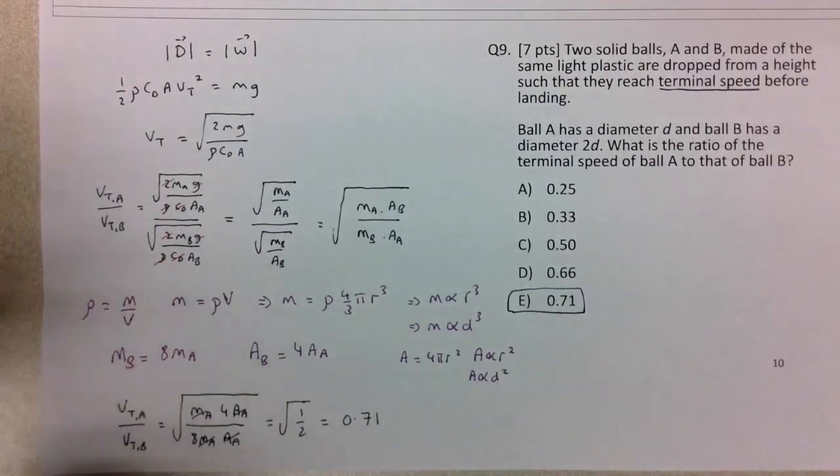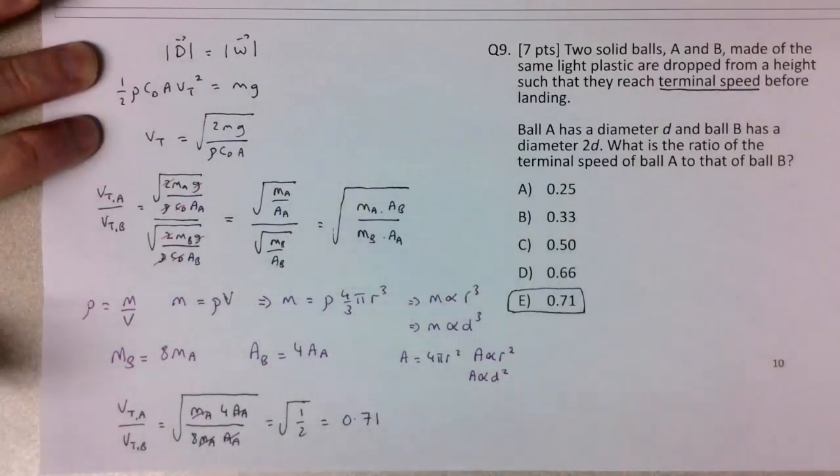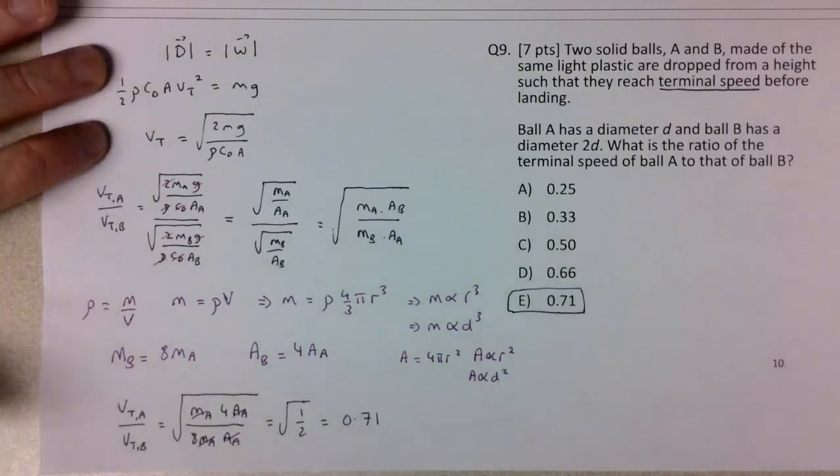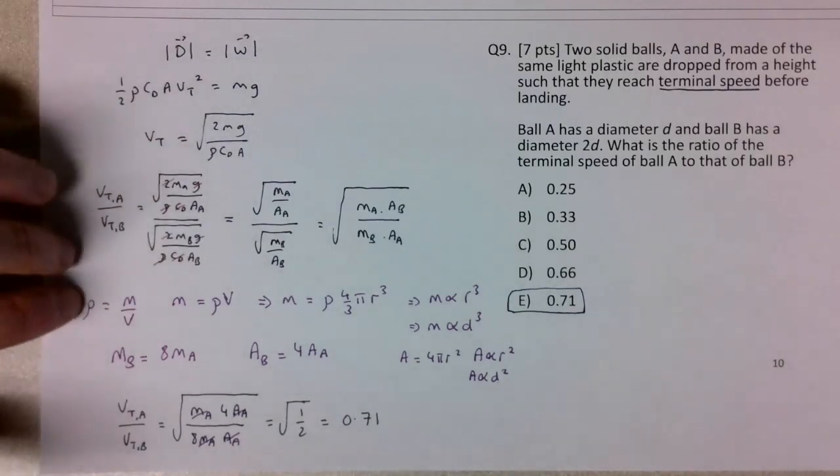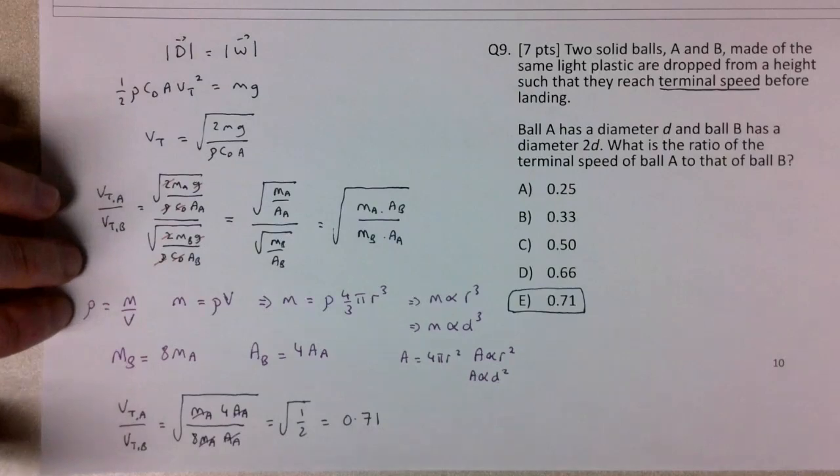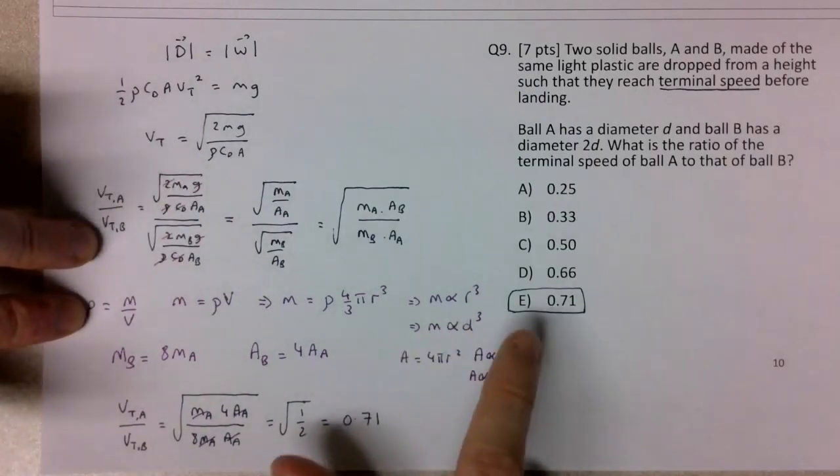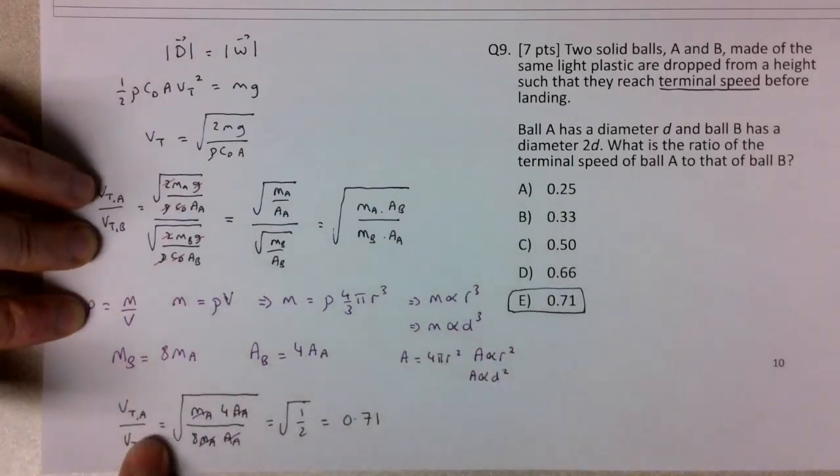That gives the correct ratio of their terminal speeds. It's a challenging question evoking the conditions for terminal speed where drag equals weight, with lots of algebra in the formula ratio. To get the masses, you need to think about the density of the plastic and scaling relationships between volume and mass with diameter, and area with diameter, then finish the algebra to get the correct answer.